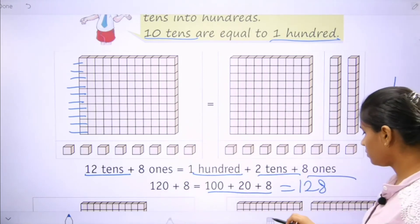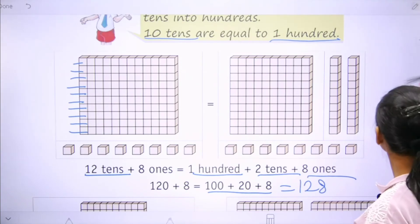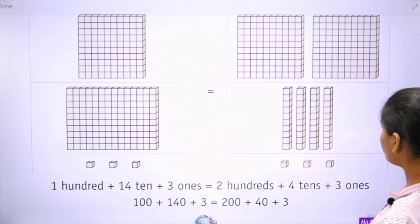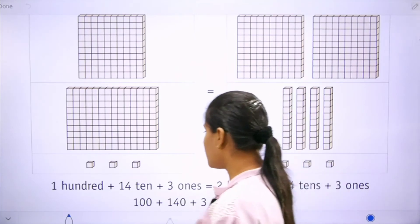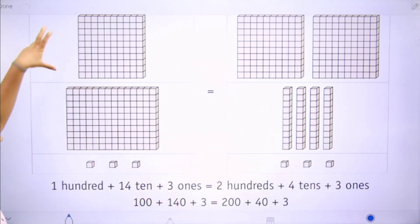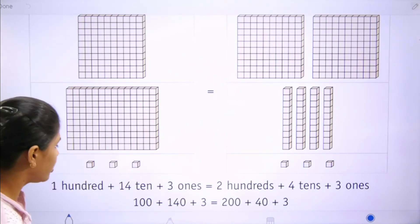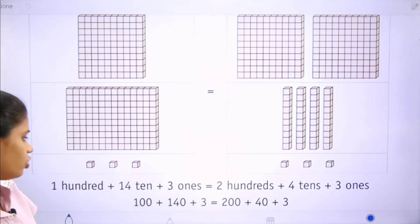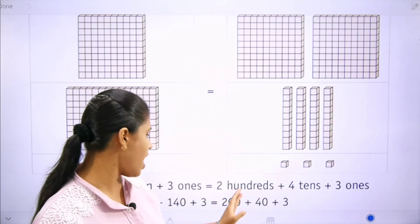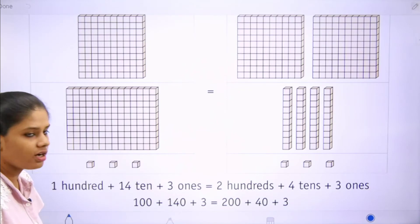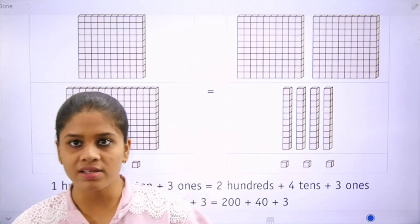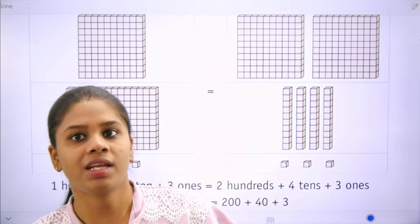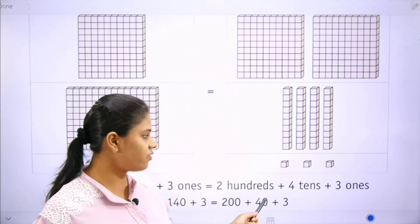Now move towards the next. This is 100. Next: 14 tens plus 3 ones equals 200 plus 4 tens plus 3 ones. So students, there are 3 ones, 4 tens and 200 — that is 243. We have placed 1s, 10s, 100s. That is 243.